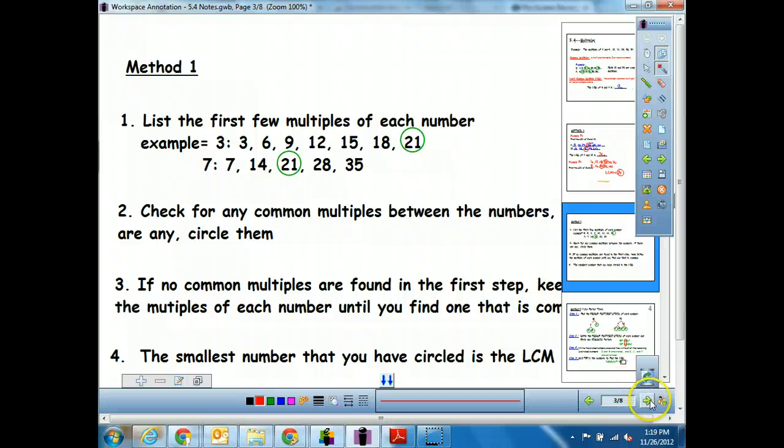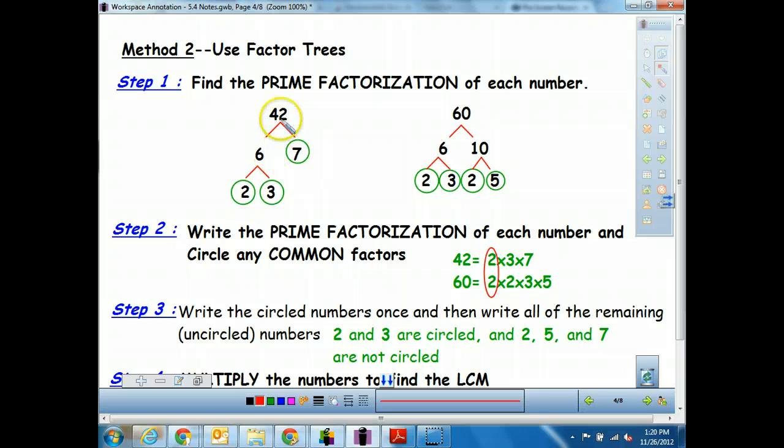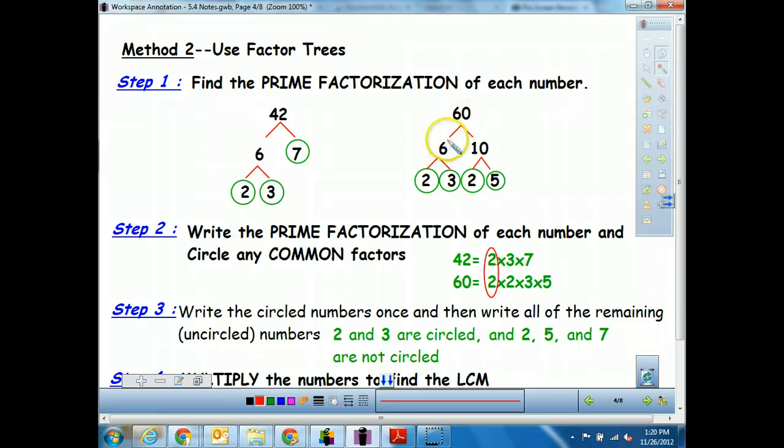My computer, my little mouse is going crazy. So we have a second method to use when we have bigger numbers. And it's a lot like the second method that we used for greatest common factor. So I want you to pay attention here. We're going to start by doing factor trees to write out the prime factorization of each number. So we've got 42, 6 times 7 is here. 7 is our prime. 6 we've got to continue on. So we get 2 times 3 times 7 for 42. And when we find the prime factorization for 60, we get 2 times 2 times 3 times 5.